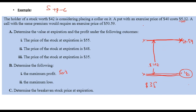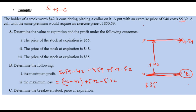Maximum profit = $50.59 − $42 + $5.32 − $5.32 = $8.59. Maximum loss occurs when the stock price crashes to zero, but the floor protects at $40. Maximum loss = $40 − $42 + $5.32 − $5.32 = −$2.